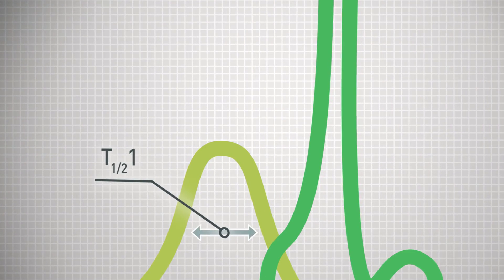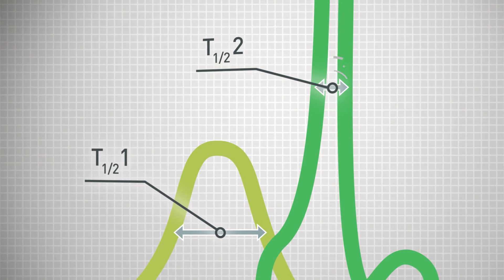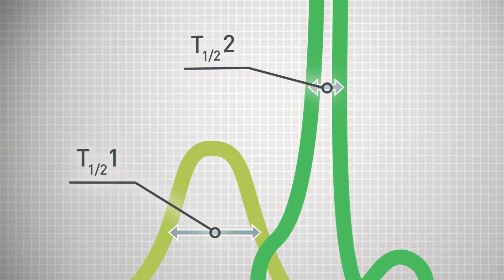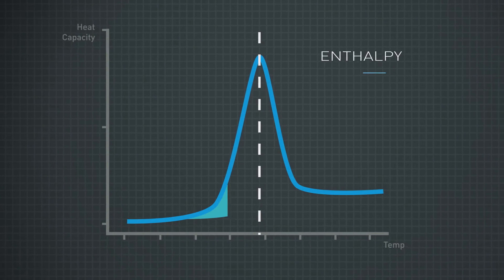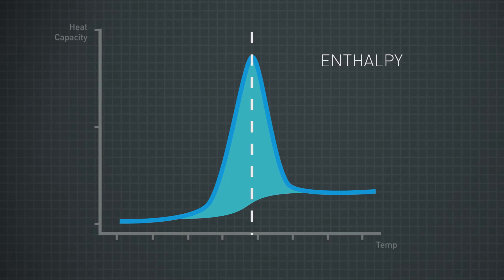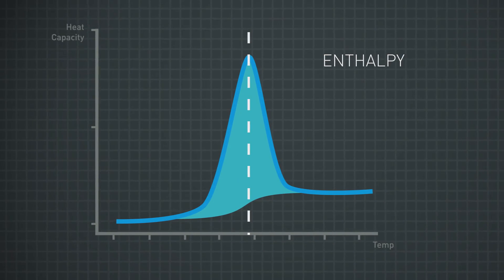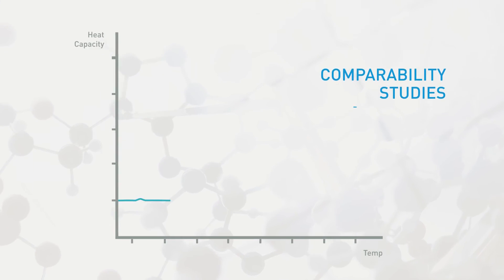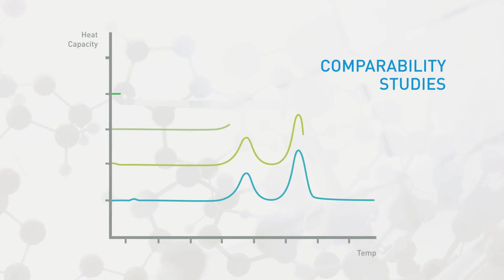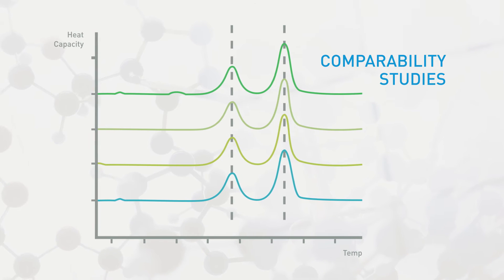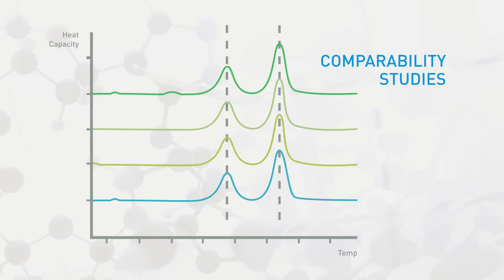T half is the width of the DSC peak. Narrower peaks indicate more compact protein structures. DSC also measures enthalpy, a measure of the energy needed to break the non-covalent bonds which keep the protein folded. In comparability studies, DSC compares the TM and other DSC parameters for different lots of protein compared to the reference protein.